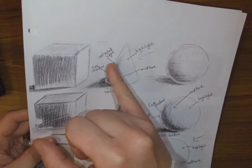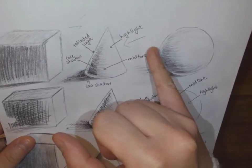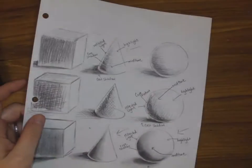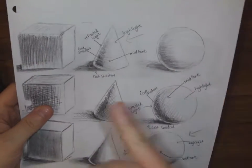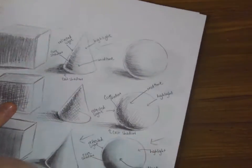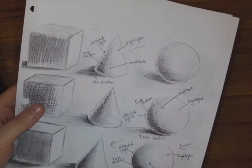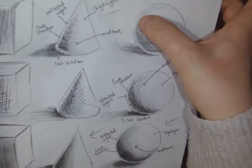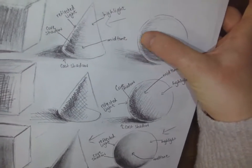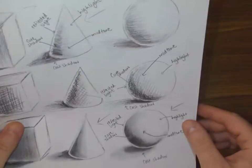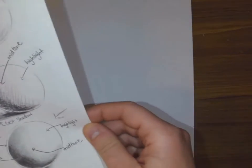And then every time you have a rounded object like the sphere, like the cone, and like the cylinder, there's always going to be a little bit of reflected light by the curved edge where the core shadow lies. So the core shadow never goes right to the end.